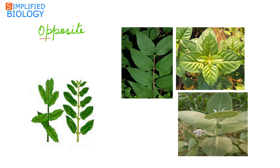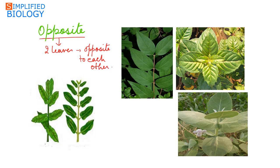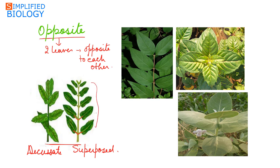Next is opposite phyllotaxy. In opposite phyllotaxy, two leaves develop at a node that are opposite to each other. Opposite phyllotaxy is of two types: opposite superposed and opposite decussate. In opposite superposed, two leaves develop at a node while the leaves developing above lie in the same plane or parallel to each other, lying just above each other. An example is Quisqualis.